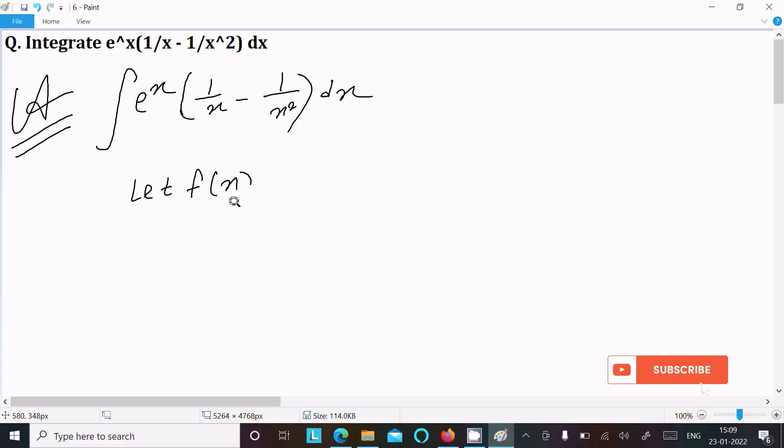So here, let f of x equal to 1 by x, then f dash x, so f dash x here, that is equal to minus 1 by x squared. If you do the differentiation of 1 by x, that is equal to minus 1 by x squared.